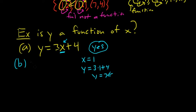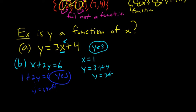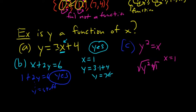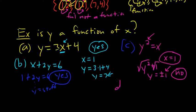When is it no? It's no if you see something like y² = x. If you plug in x = 1, you get y² = 1, and when you take the square root you get a plus or minus, so you get two y values. The answer is no. Similarly, |y| = x gives a plus or minus when you solve for y, so the answer is also no.